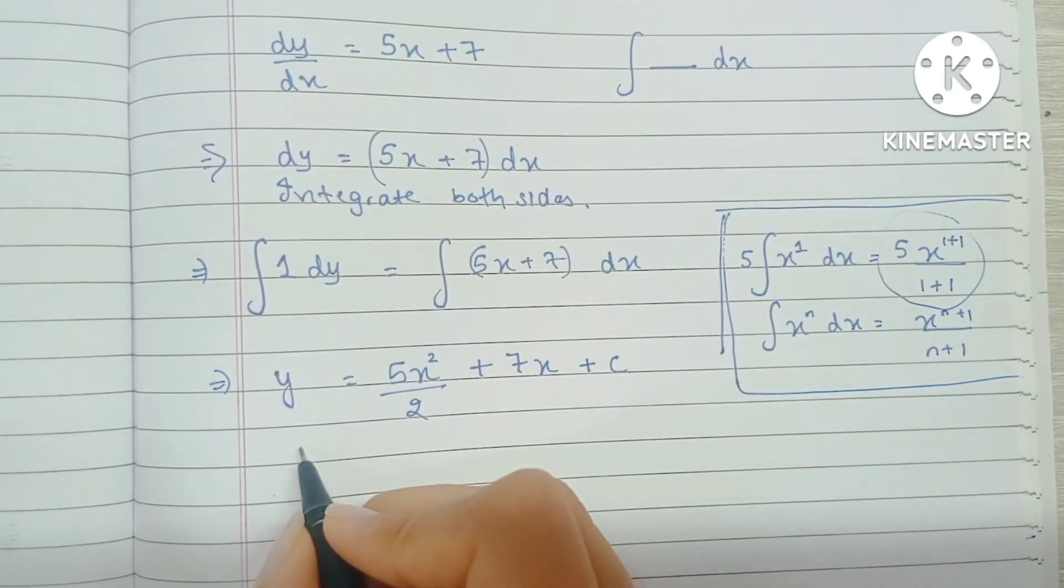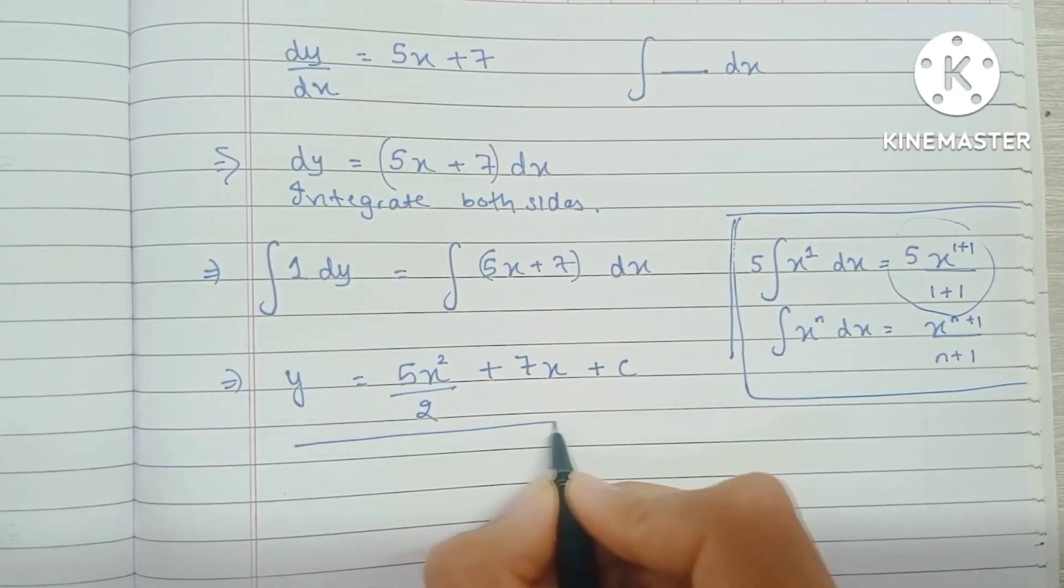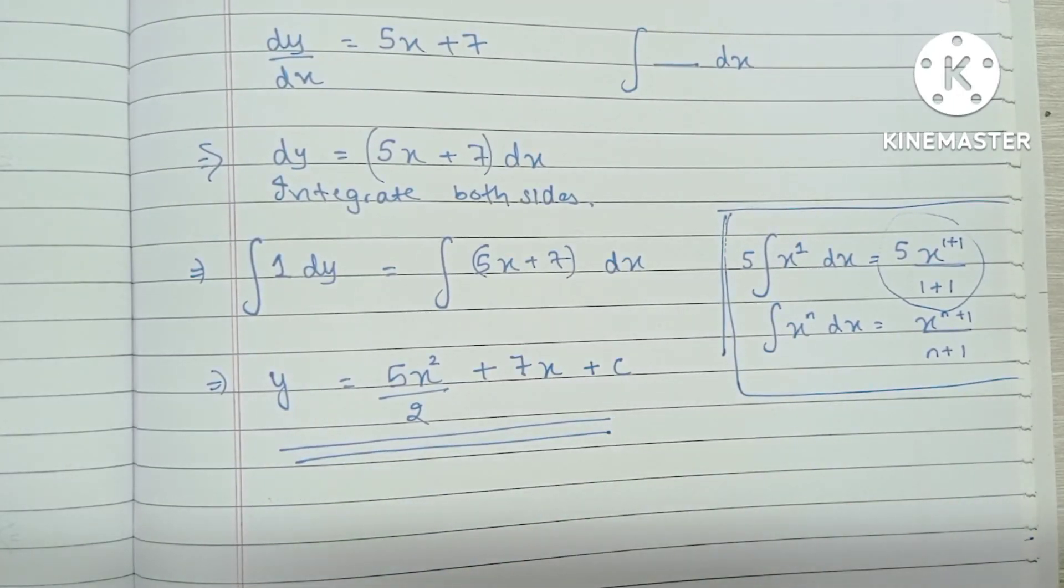So now we can see that the equation we have has no differential term. We've gotten rid of dy/dx, which means that this is the final answer.